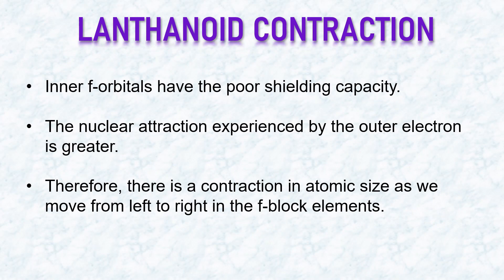The best example is lanthanoid contraction. In case of lanthanides, which are F block elements, the inner F orbitals have poor shielding capacity. Therefore, the nuclear attraction experienced by the outer electron will be greater. As a result, there is a contraction in the atomic size as we move from left to right in the F block elements, especially in case of lanthanoids.